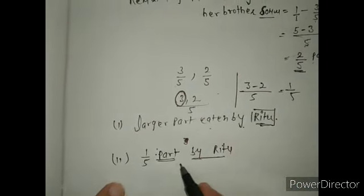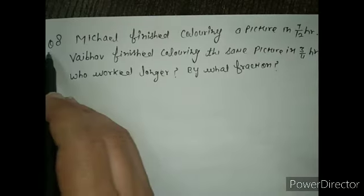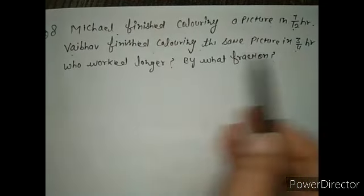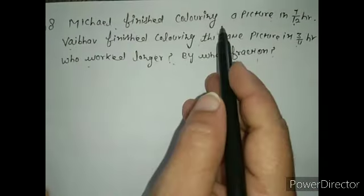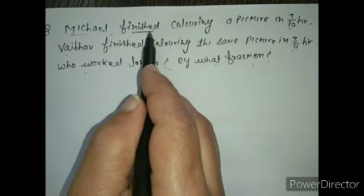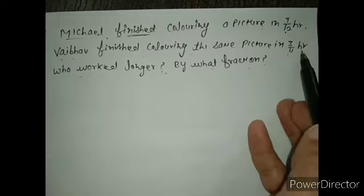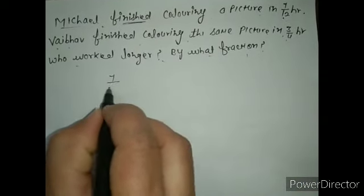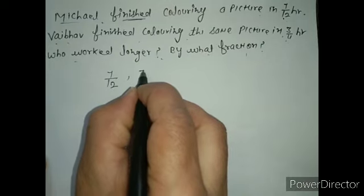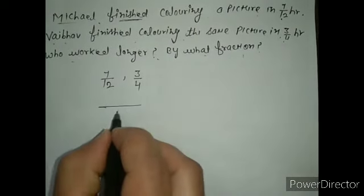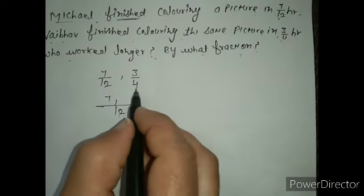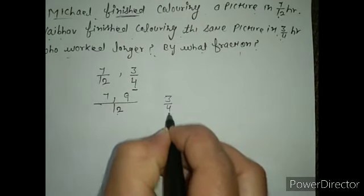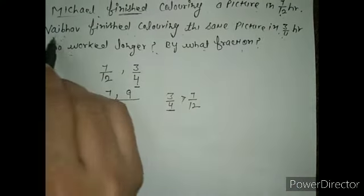Question number 8: Michael finished coloring a picture in 7/12 hour, and Vaibhav finished coloring the same picture in 3/4 hour. Who worked longer and by what fraction? Michael took 7/12 hour and Vaibhav took 3/4 hour. First we compare the fractions. The LCM of 12 and 4 is 12. Comparing, 3/4 is greater than 7/12, so Vaibhav finished coloring more time compared to Michael.